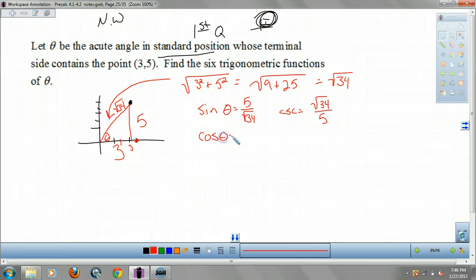Cosine of theta, that's your adjacent over hypotenuse, 3 over square root of 34. So that means secant is the reciprocal of that, square root of 34 over 3.